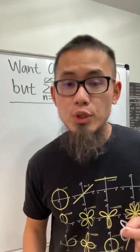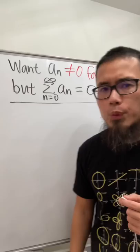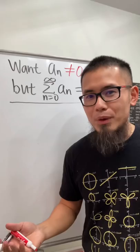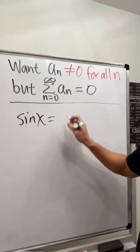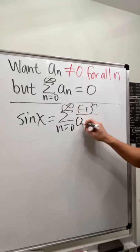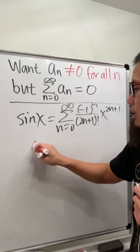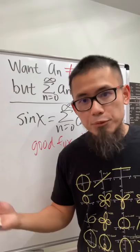Here's a tricky question: find a sequence where aₙ ≠ 0 for all n, but the infinite series Σaₙ = 0. We can use the infinite power series for sine: sin(x) = Σ (−1)ⁿ · x^(2n+1) / (2n+1)!, which converges for all x. Since sin(π) = 0, let's plug in x = π.